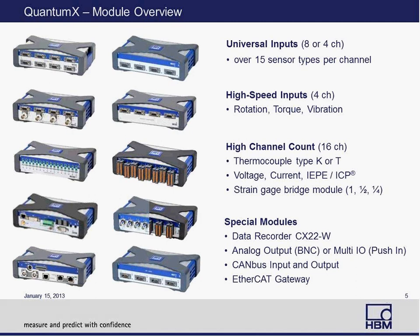There are also modules that address high channel count. The QuantumX MX1615 falls in this category. Previously we released the MX1601, primarily targeted towards thermocouple or temperature acquisition. The new MX1615 is geared more towards experimental stress analysis, based mostly on strain gauge type transducers. In addition, there are special modules such as the data recorder module called the CX22W, which allows you to pair a QuantumX DAQ module with the CX22 for a standalone system without a computer. QuantumX also supports EBUS modules for inputs and outputs, and offers an EtherCAT gateway for real-time deterministic applications.